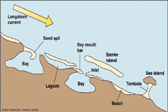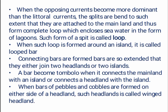Here are the different types of bars and barriers. When the opposing currents become more dominant than the littoral currents, the spits are bent to such an extent that they are attached to the mainland and form a complete loop, which encloses seawater in the form of a lagoon. Such a form of a spit is called a loop. When such a loop is formed around an island it is called a looped bar. Connecting bars are so extended that they either join two headlands or two islands. A bar becomes a tombolo when it connects the mainland with an island or connects a headland with an island. When bars of pebbles and cobbles are formed on either side of a headland, such headlands are called winged headlands.